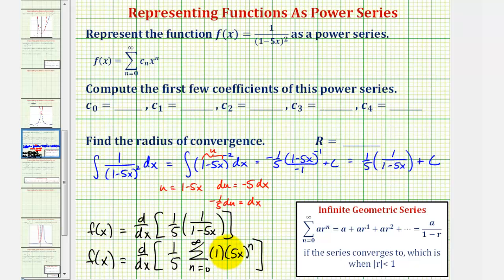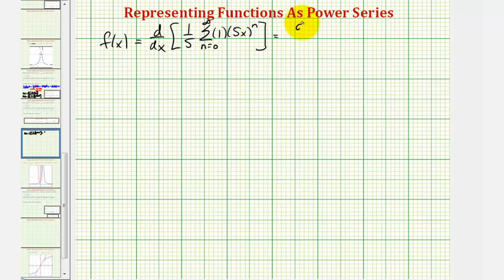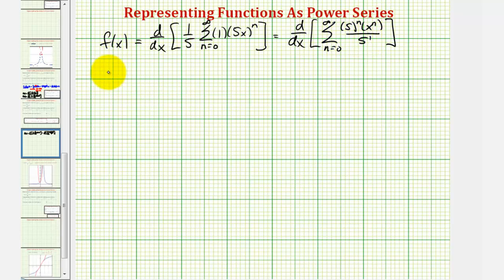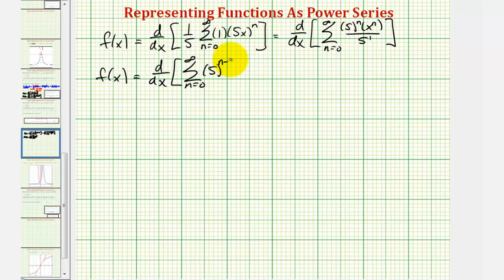We'll simplify this power series and then find the derivative with respect to x. We can write (5x)^n as 5^n times x^n, so this becomes the derivative with respect to x of the summation from n = 0 to infinity of 5^n times x^n divided by 5. Simplifying by subtracting exponents, we have f(x) equals the derivative with respect to x of the summation from n = 0 to infinity of 5^(n-1) times x^n.